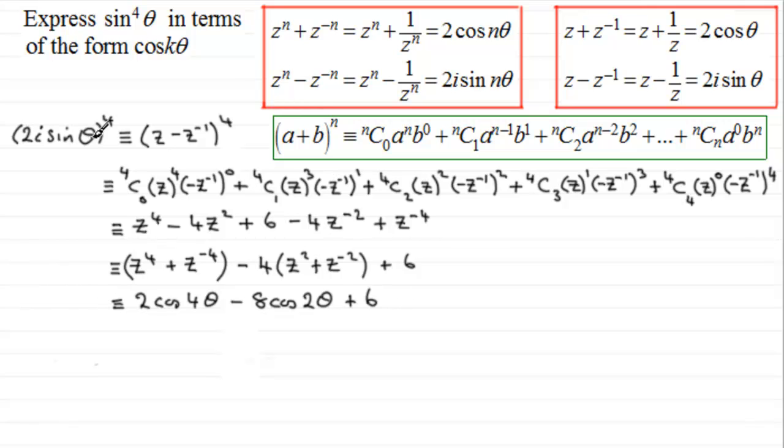But on this last line here, let's just expand this out. We've got i to the power four - now i to the power four is one, so we get a real value from this. Two to the power four is sixteen, so therefore what we've got is sixteen sine to the power four of theta.